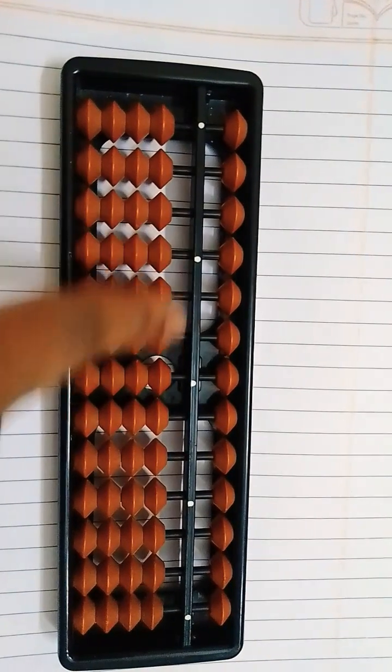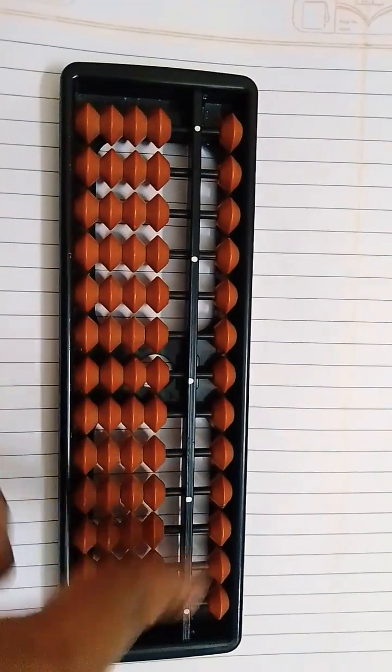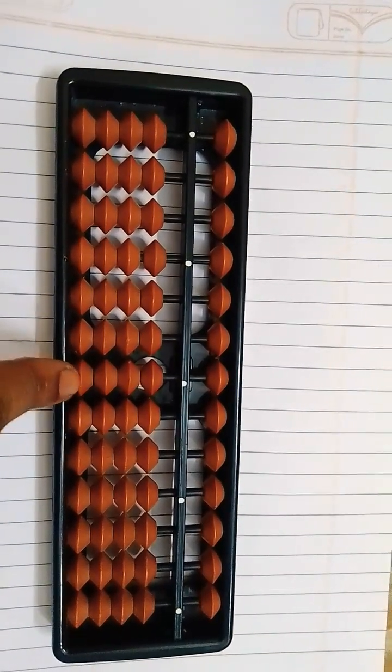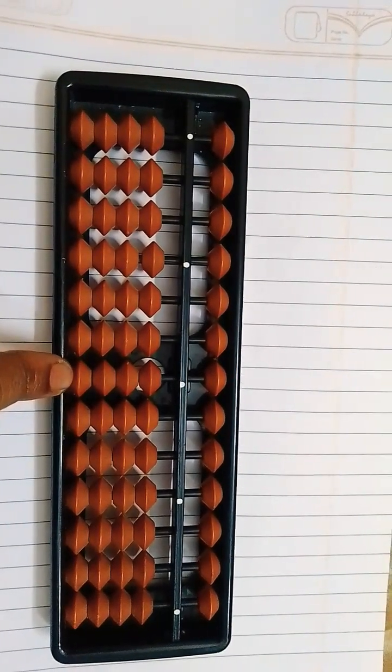Next, can you see these white color points? Those are called dots. This rod is called the units rod, this center rod is the units rod.